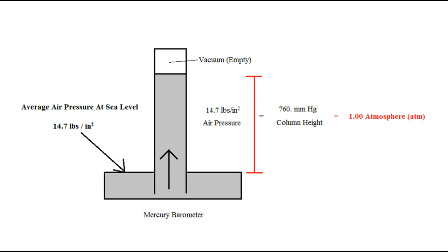First off, the barometer. The barometer is mercury — it's been put in a tube upside down. The tube is tall enough that the mercury flows down and we're left with a vacuum at the top. The average air pressure at sea level is 14.7 pounds per square inch and it pushes in every direction. As it pushes down, it pushes mercury up to a height of 760 millimeters of mercury.